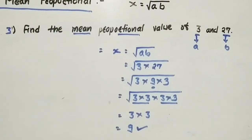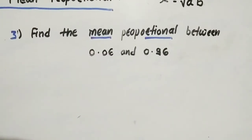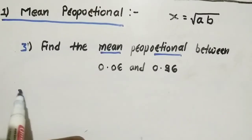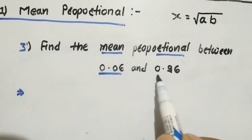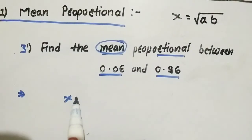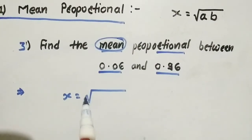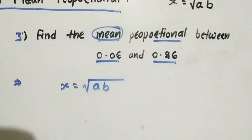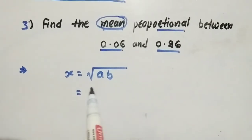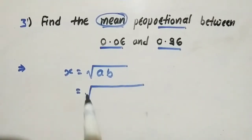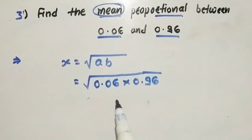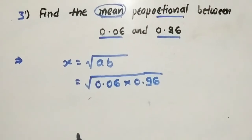Let's solve another problem: find the mean proportional between 0.06 and 0.96. We need to find the mean, so the formula is x equals square root of a times b. Here we have 0.06 times 0.96.